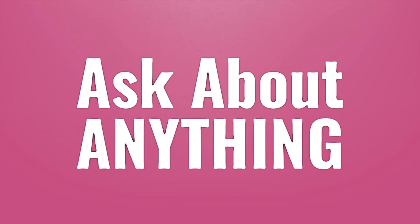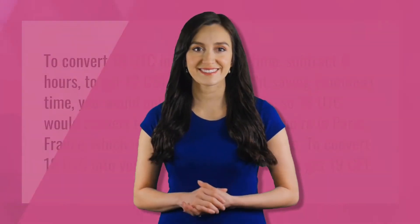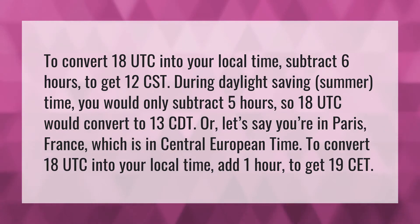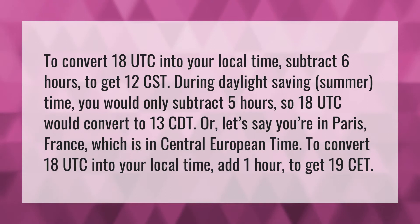We bring you the answers to all your questions. To convert 18 UTC into your local time, subtract six hours to get 12 CST during standard time.